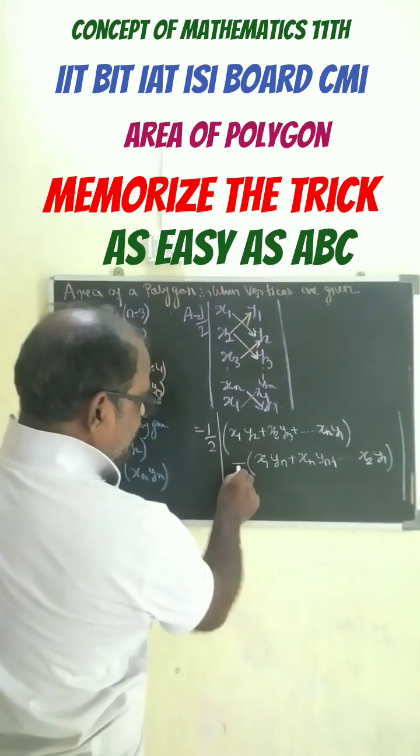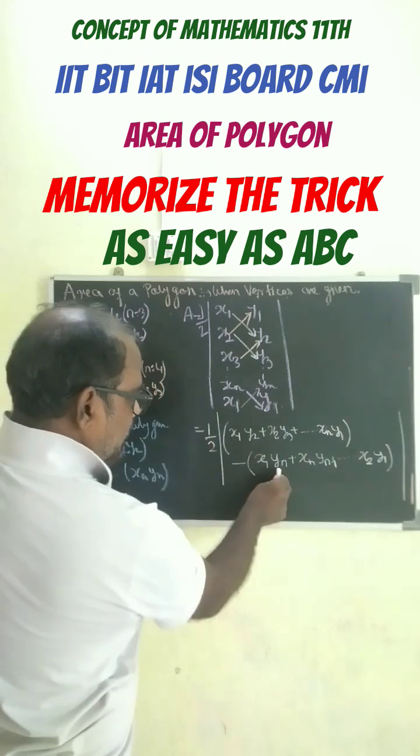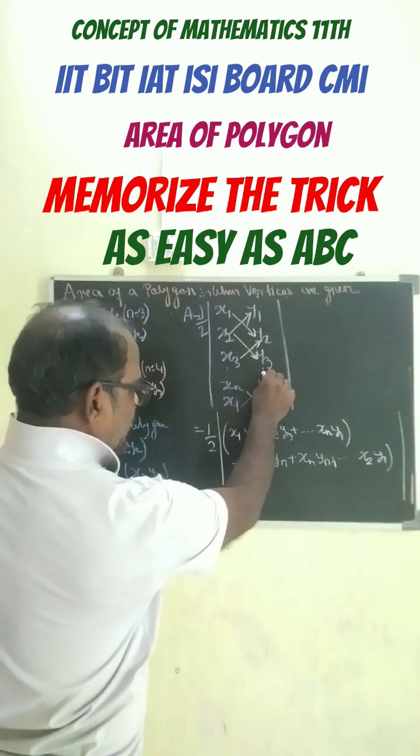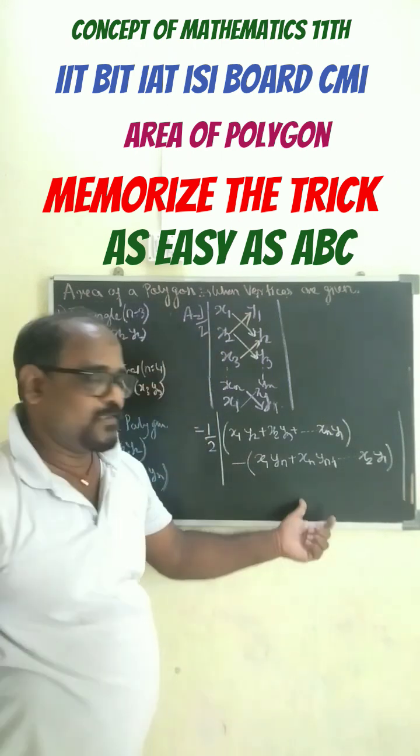And when you go from here to here, put here negative. And over here, x1, yn, xn, yn-1. In this form, we can write down the answer.